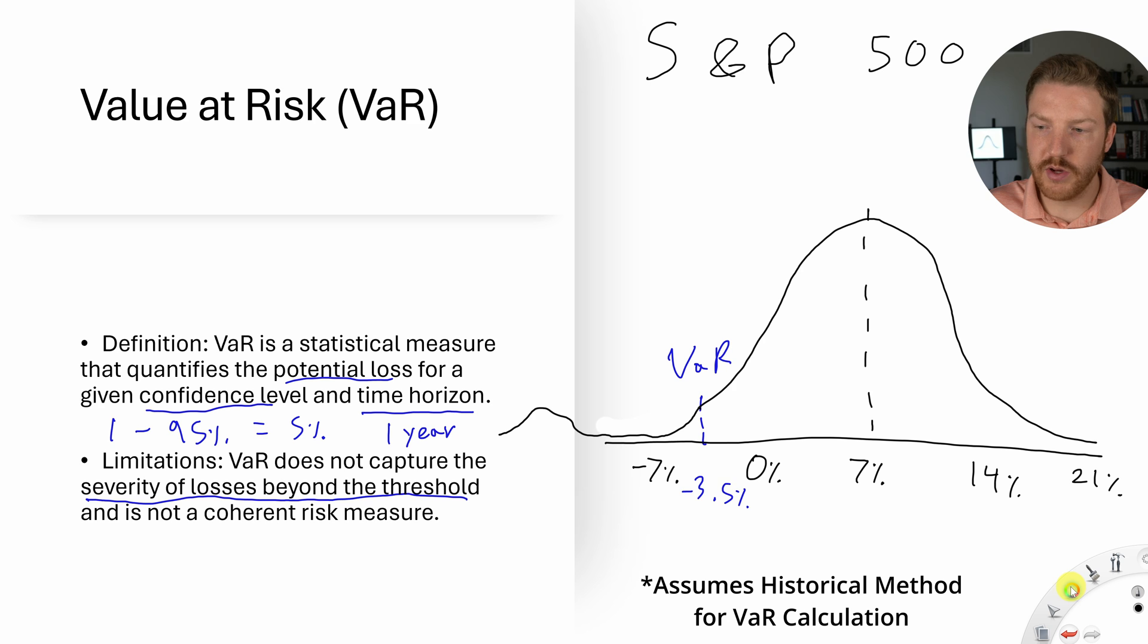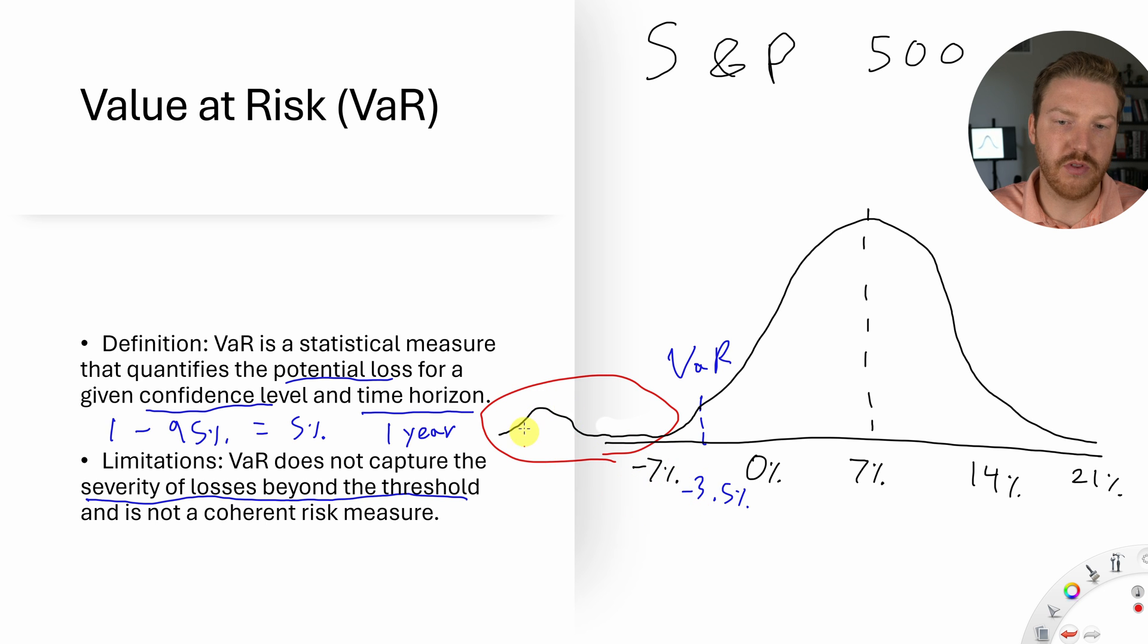So our VaR is still negative 3.5%, but we have way more risk now than we did back when the distribution looked more normal. So there's all this tail risk that is actually more likely to happen, and we have zero measurement of that.